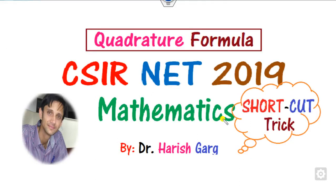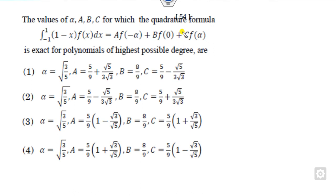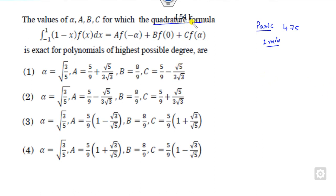Hello everyone, welcome to the next lecture on the CSR NET 2019 Mathematics Solution. Today we will discuss shortcut tricks related to the quadrature formula. This is a question from part C worth 4.75 marks. How can you solve this question within 1 minute? You have to follow this trick whenever there is a question related to the quadrature formula asked in the examination.